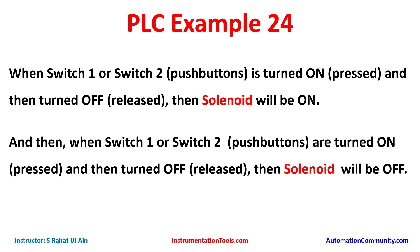Example 24: when switch 1 or switch 2 is turned on and then turned off, the solenoid will turn on. When switch 1 or switch 2 is turned on and then turned off again, the solenoid will turn off. That means we have two push buttons. If either switch is pressed and released the first time, the solenoid turns on; pressed and released a second time, the solenoid turns off.